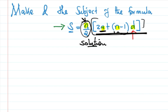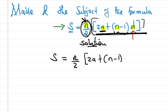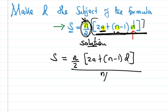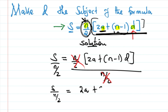The opposite of multiplication is division, so we're going to divide both sides by n over 2. So we have S equals n over 2 times the bracket 2a plus open bracket n minus 1 times d. We divide both sides by n over 2. We have S divided by n over 2.